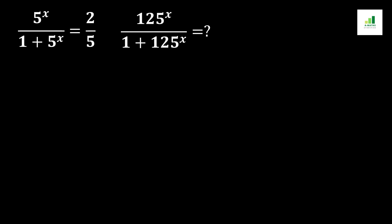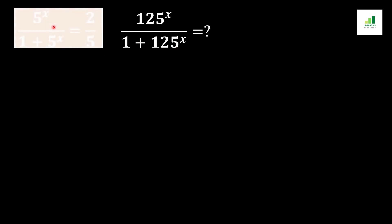Welcome to AMS. Today in this video we are going to solve a question. The given equation is 5^x over (1 + 5^x) equals 2 over 5. Our target equation is to find the value of 125^x over (1 + 125^x). In order to solve this, we will start with the given equation.